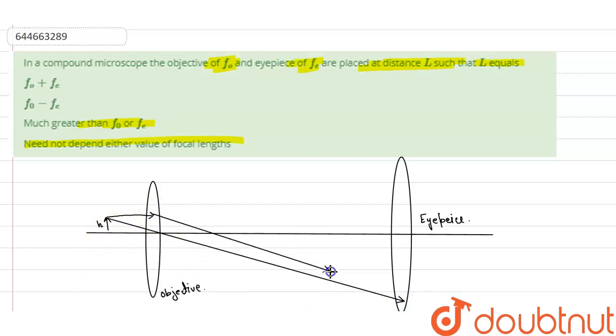Now this ray will pass through the eyepiece like this. So this angle is known as theta. Now from here to here is the focal length, that is F0. And from intersection point over here, let's suppose this was A and B.